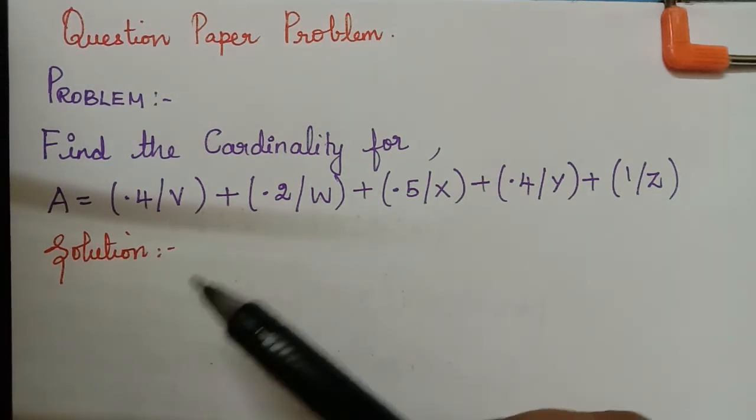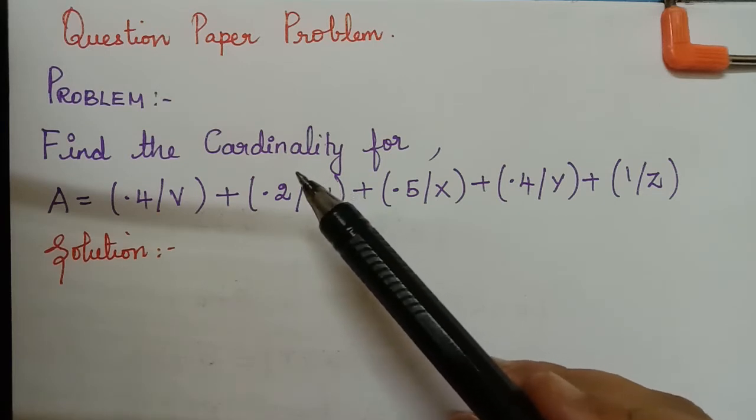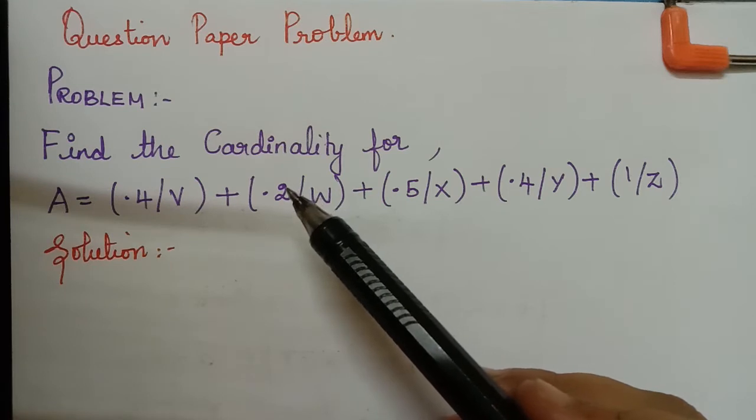Actually in one of the previous videos I have explained about cardinality where we have learnt about three types of cardinality. One will be scalar cardinality, next will be relative cardinality, and the third one will be fuzzy cardinality.